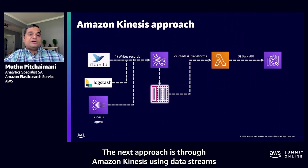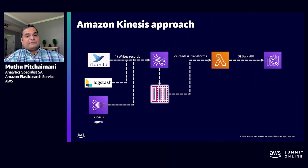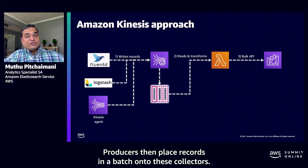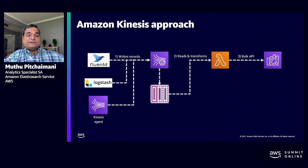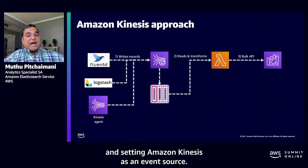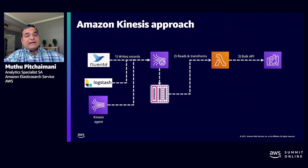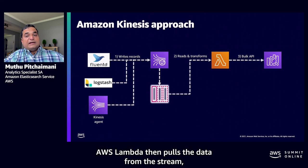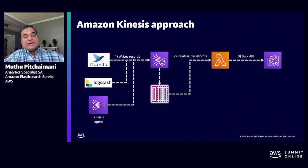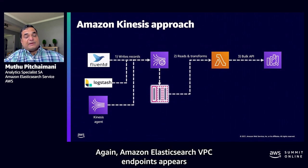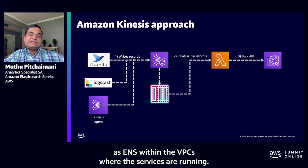The second approach is through Amazon Kinesis Data Streams, which functions as the buffer. Producers place records in batches onto these collectors — collectors can be Logstash, Fluentd, Amazon Kinesis Producer Library, or Amazon Kinesis Agent. Lambda performs the role of aggregator by selecting a VPC option and setting Amazon Kinesis as an event source. AWS Lambda pulls data from the stream based on batch size and writes to Amazon ES via the bulk API, with Amazon Elasticsearch VPC endpoints appearing as ENIs within the VPCs where these services are running.